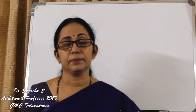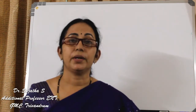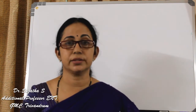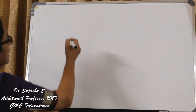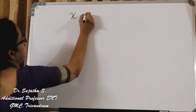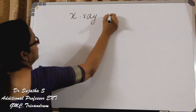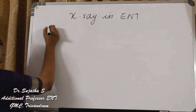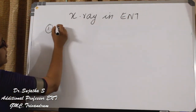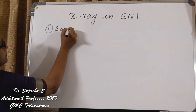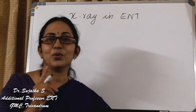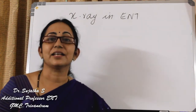Today I will explain the commonly asked or commonly seen X-rays in ear, nose and throat — throat meaning the neck. So the X-rays in ear, nose and throat. First, in the ear, luckily there is only one area, that is X-ray mastoid.